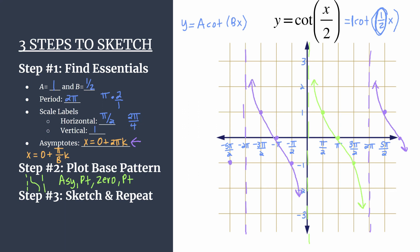And if you want, you can show we know that this pattern would continue. So we have about 2, 3 cycles of y equals cotangent x over 2.